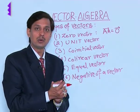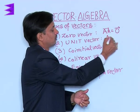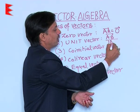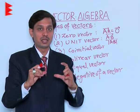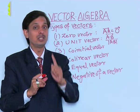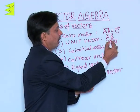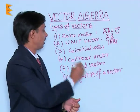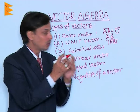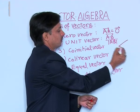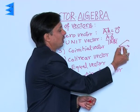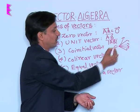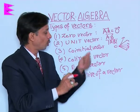A unit vector: if a vector AB is divided by its magnitude, or you can say a vector having magnitude 1, it is a unit vector. Co-initial vectors are when two or more vectors start from the same initial point but go in different directions — such vectors are called co-initial vectors.